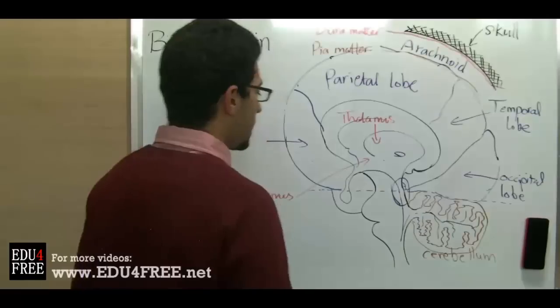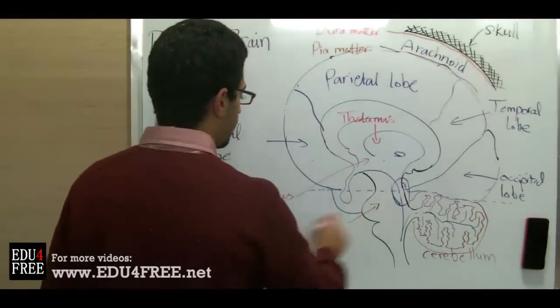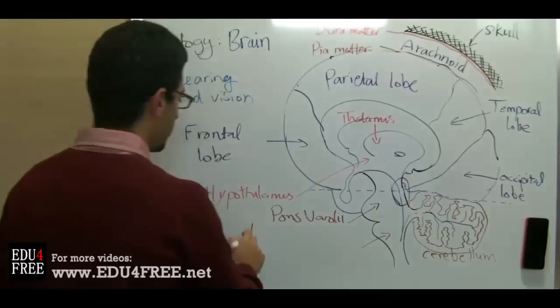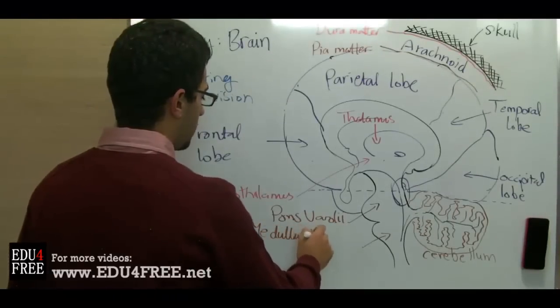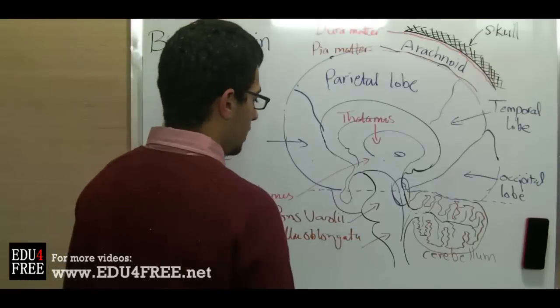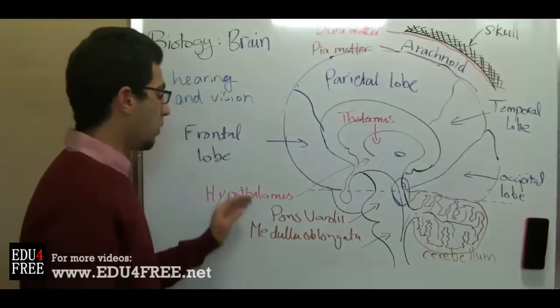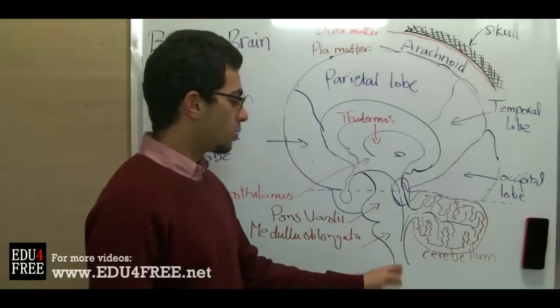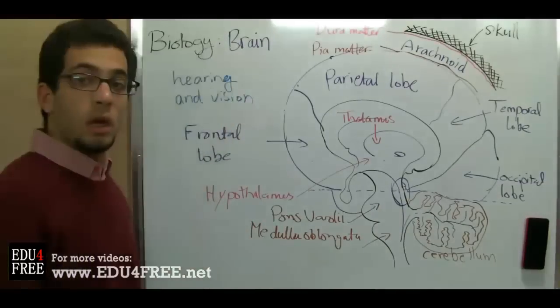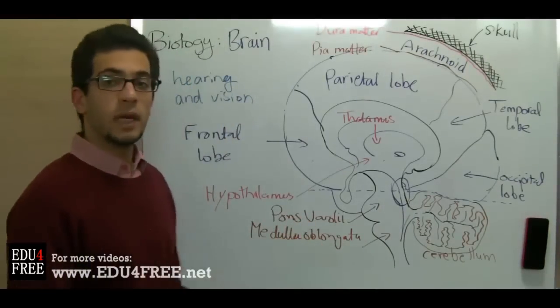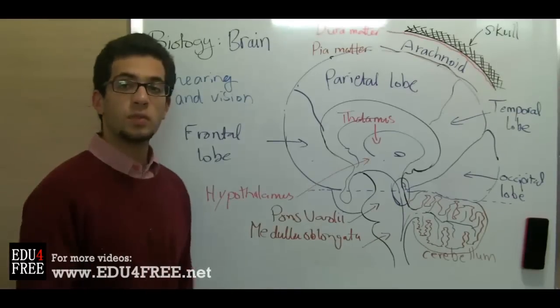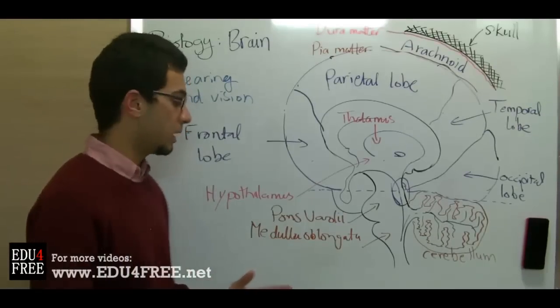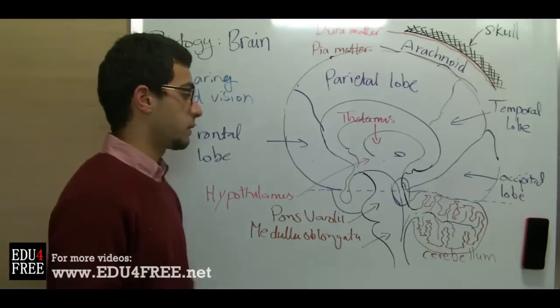Next we have the pons varoli and medulla oblongata, and then here we have the spinal cord. The pons varoli and medulla oblongata help in the transmission of nerve impulses to and from the spinal cord. The medulla oblongata contains vital centers of the body which control respiration, swallowing, coughing, sneezing, vomiting, and control the actions of blood vessels, like widening the blood vessels or the contraction of the blood vessels.